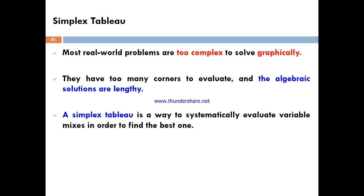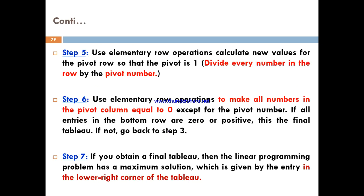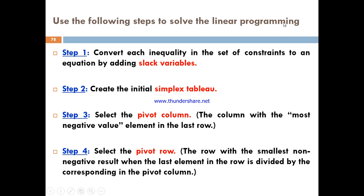The initial tableau has its first column related to basic variables, and the first row includes all variables with their solutions. The coefficients are placed in the body section, and the solution area contains the final values of the linear programming model. The second step is to create the initial simplex tableau.